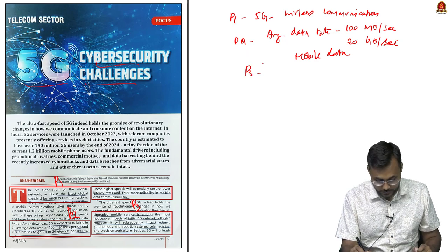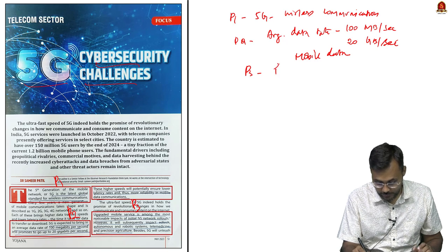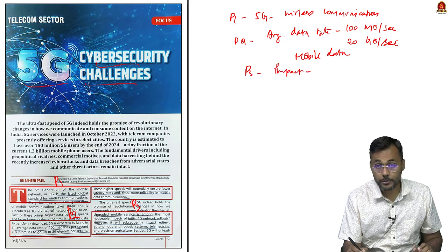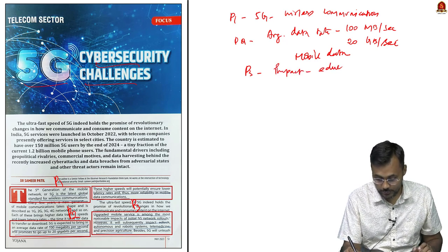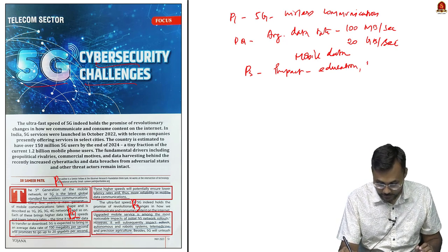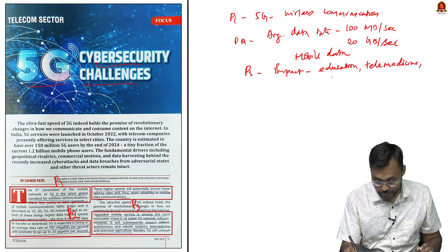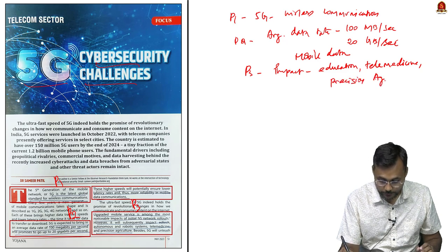Paragraph 3 shows the impact of 5G on common life: it impacts the education sector because data is transferred very fast, telemedicine, precision farming or precision agriculture, and robotics — all have very high potential with 5G.